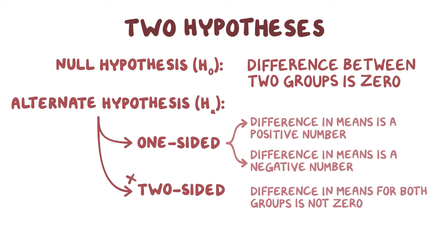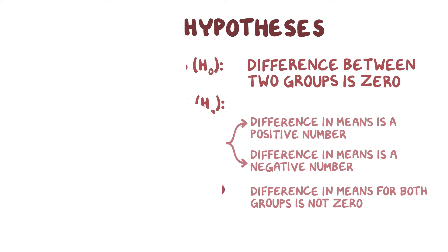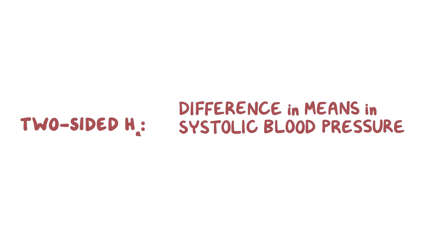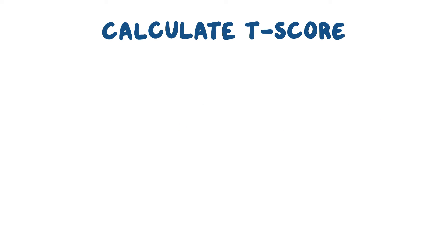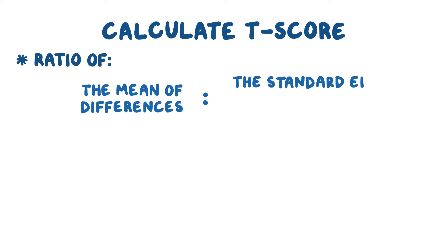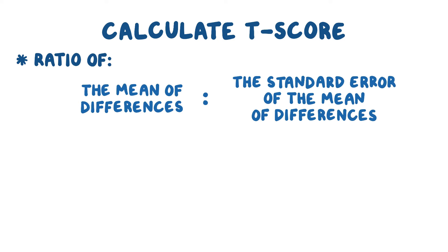Typically, researchers choose to use two-sided t-tests, since they usually don't know how the medication will affect people who take it. So the two-sided alternative hypothesis for our study would state that the mean of the differences in systolic blood pressure for people that take the medication compared to people that don't is not equal to zero. To test these hypotheses, we need to calculate a t-score, which is a ratio of the mean of the differences between the two groups to the standard error of the mean of the differences between the two groups.